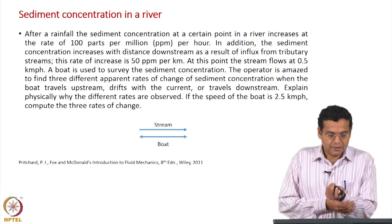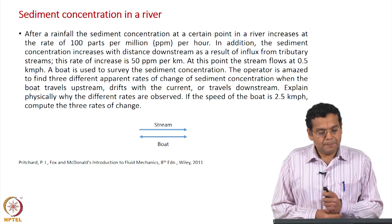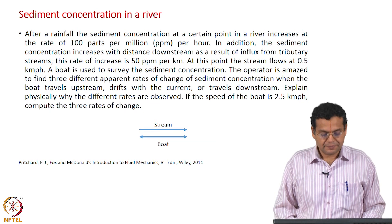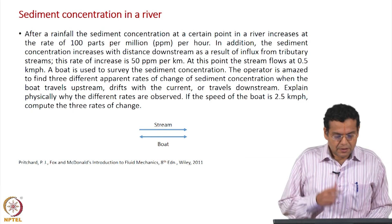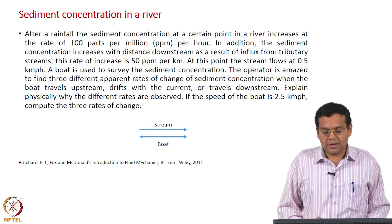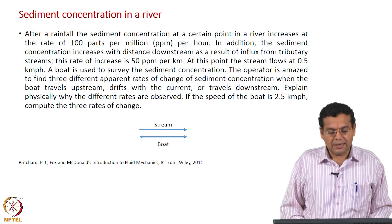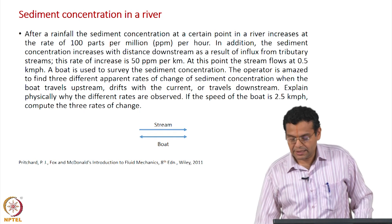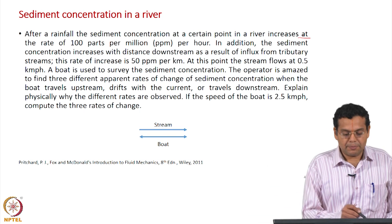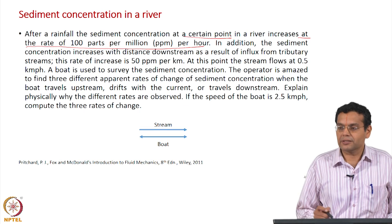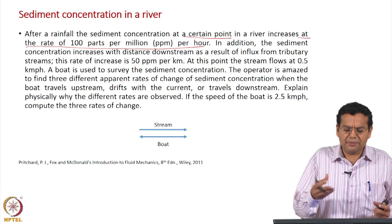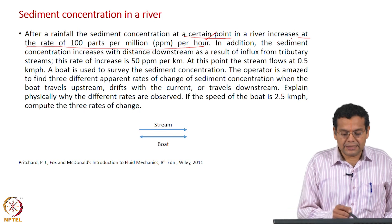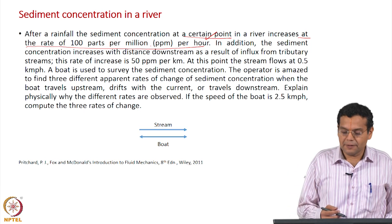Another nice example of measuring the sediment concentration in a river. After rainfall, the sediment concentration at a certain point in a river increases at the rate of 100 parts per million per hour. This tells you the local rate of change, so ∂c/∂t is given by this value.